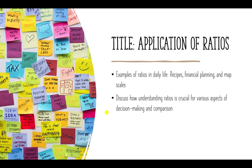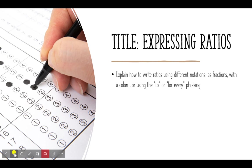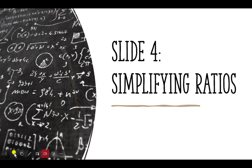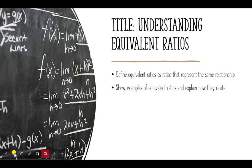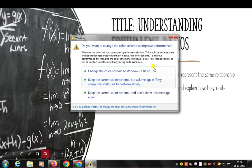Slide 2 covers recipes, financial planning, and map skills, discussing how understanding ratios is crucial for decision making and comparison. Slide 3 is Writing Ratios — explaining how to write ratios using different notations: as fractions, with a colon, or using 'to' or 'for every' phrasing. Slide 4 is Simplifying Ratios — steps to simplify ratios by dividing both parts by their greatest common factor, with example problems. Slide 5 is Equivalent Ratios — defining equivalent ratios as ratios that represent the same relationship.